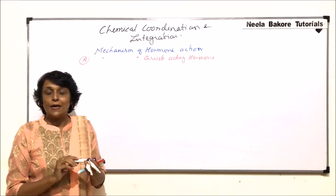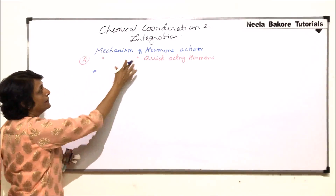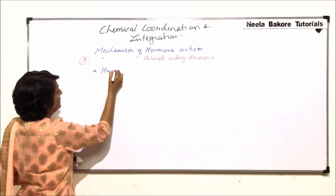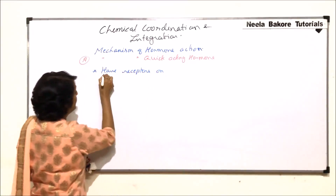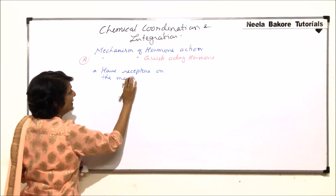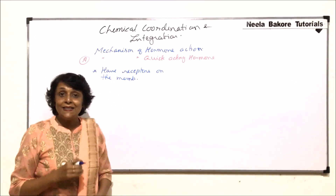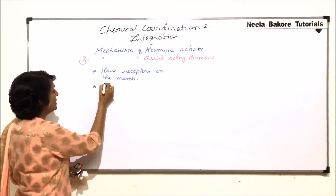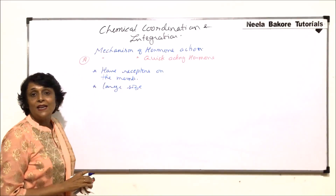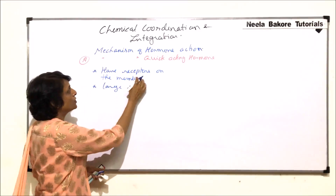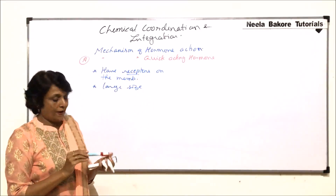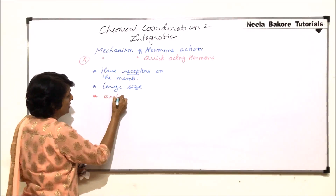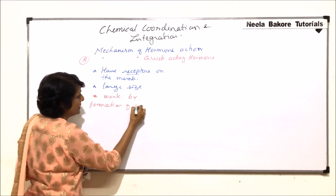Before discussing specific examples, we need to understand a few important things about quick acting hormones. Number one: these quick acting hormones have their receptors on the membrane of the cell. That means these hormones do not go inside the target cell. They are large in size, and because of this large size they are not able to penetrate the plasma membrane, so they attach to receptors on the surface.